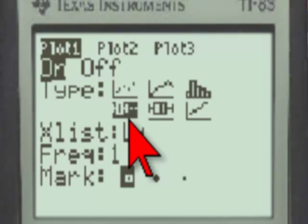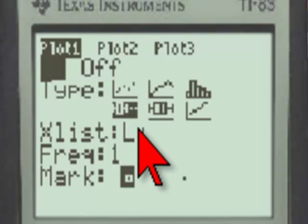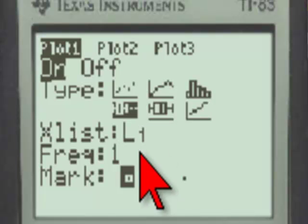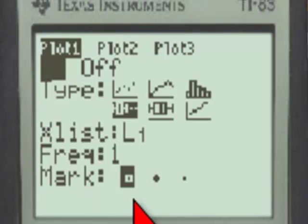The type of graph that we want to use is the modified box plot, which is the box plot that is selected with the small dots after it. The x list is going to be list 1. The frequency is 1. And the mark is the mark that will be used to denote any outliers in this distribution.